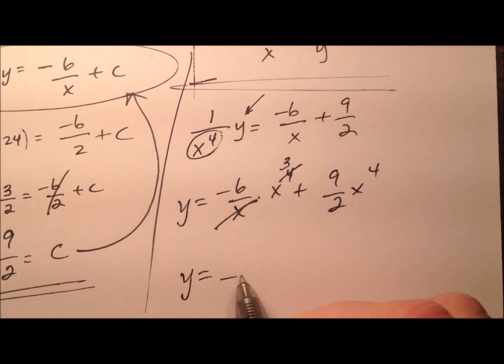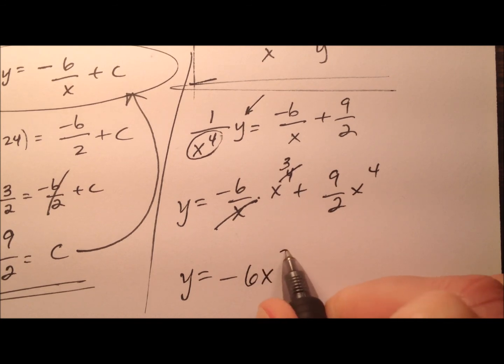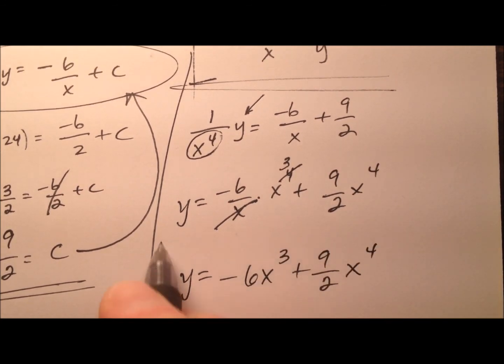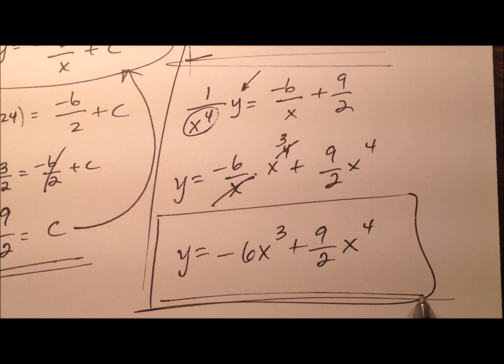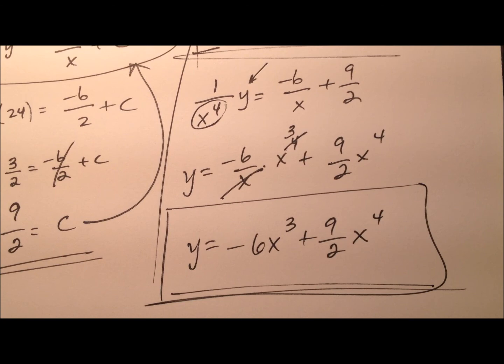So y equals negative 6 x cubed plus 9 halves x to the 4th. And that will be the particular solution given our original differential equation and initial condition.